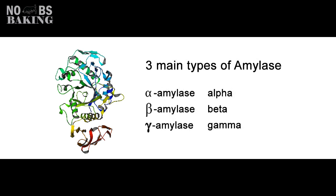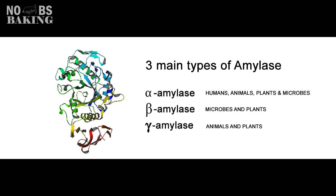The three main types of amylases are alpha amylase, beta amylase, and gamma. Alpha amylase is present in humans, animals, plants, and microbes, whereas beta amylase is primarily found in microbes and plants. Gamma amylase, on the other hand, can be located in both animals and plants.